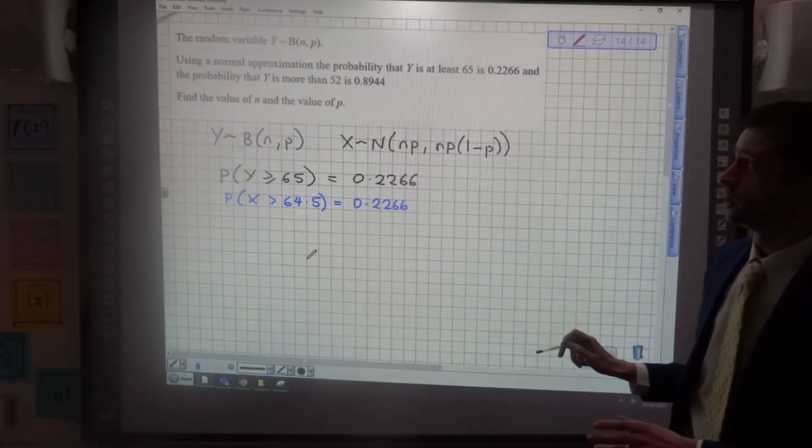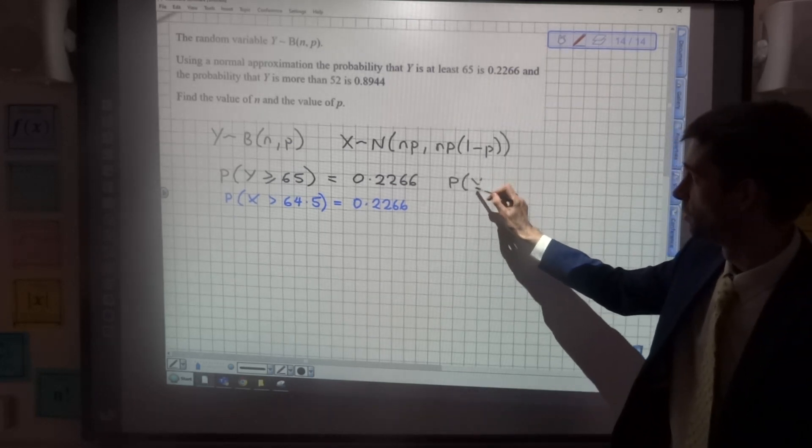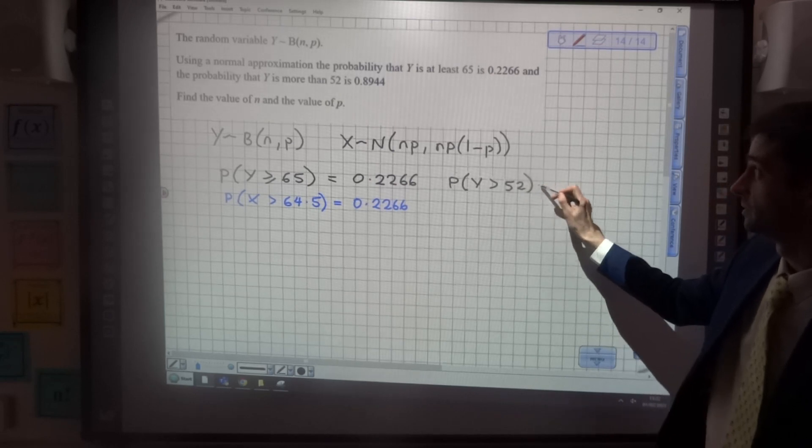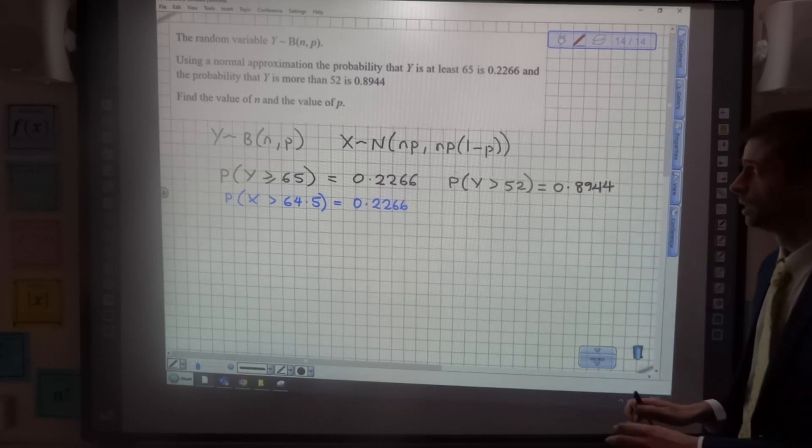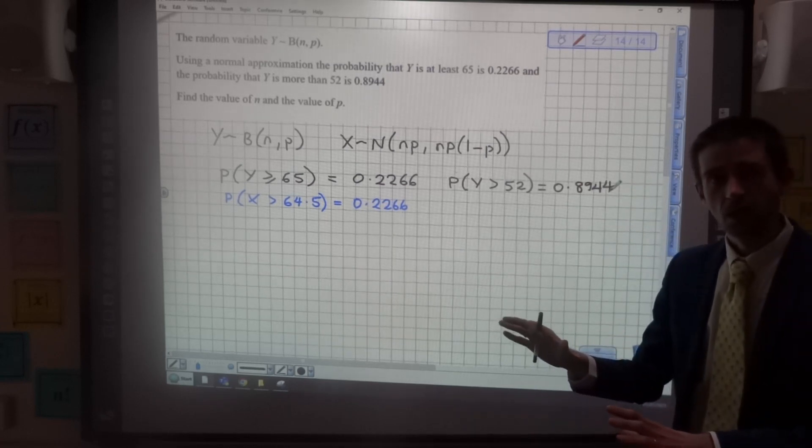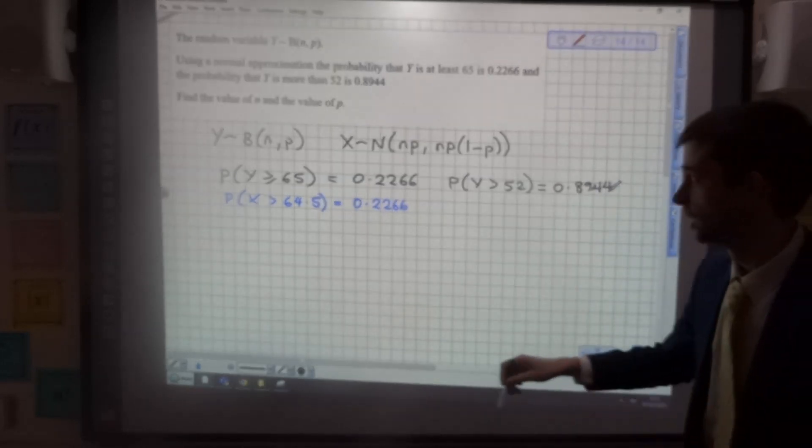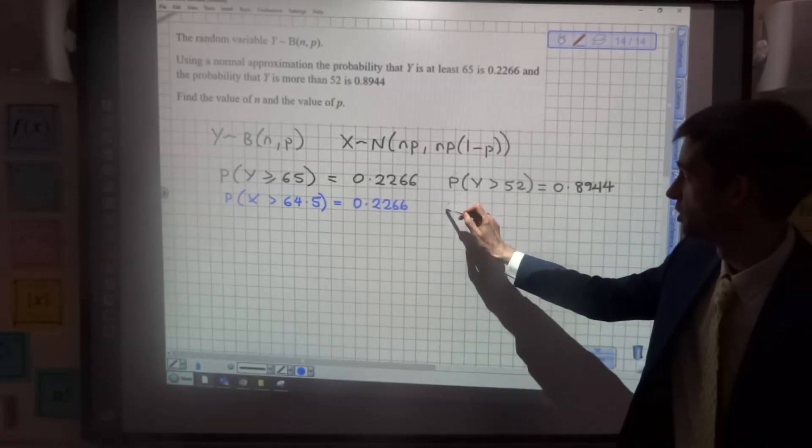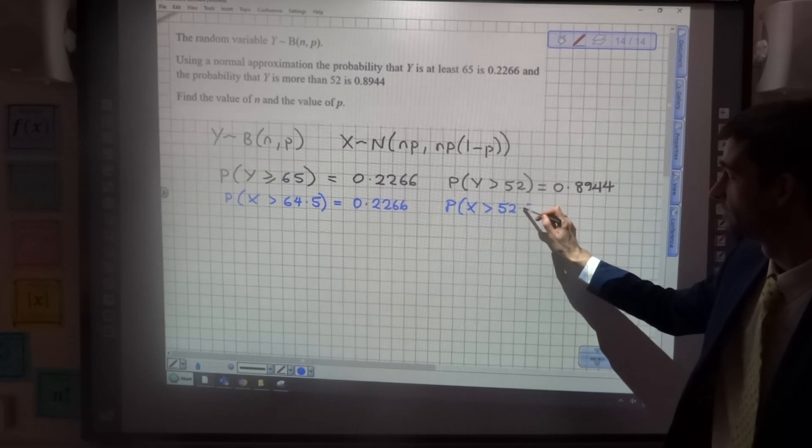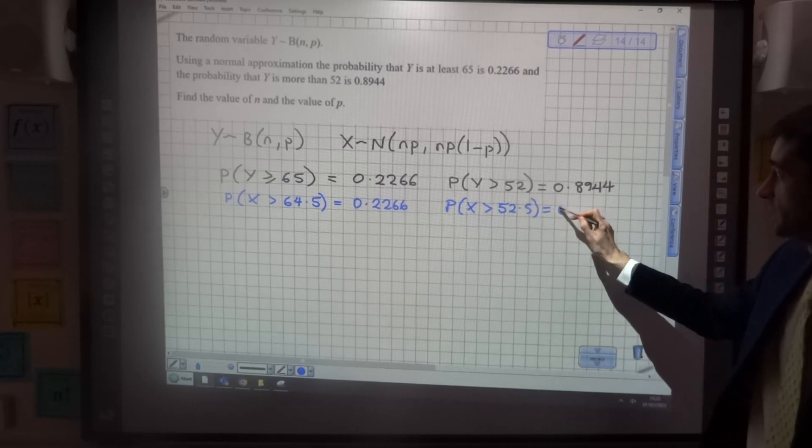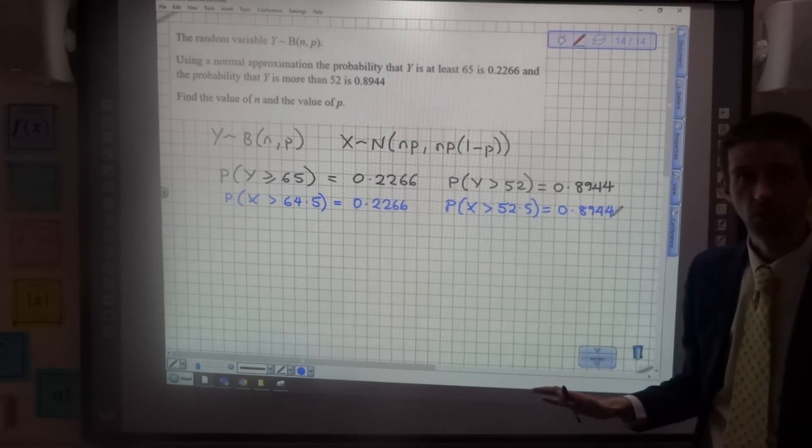Now, the other bit of information we're given is the probability that Y is more than 52. So the probability that Y is greater than 52, not including 52, is equal to 0.8944. We want the values above 52, so for the discrete distribution we want 53 and above, which means that when we're using the continuous distribution, if we want 53 and above, we're going to have to start at 52.5. The probability that X is greater than 52.5 is going to equal 0.8944.